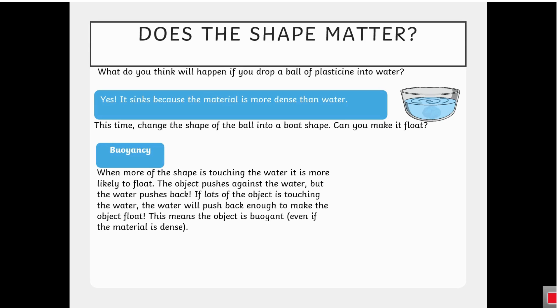Buoyancy. When more of the shape is touching the water, it is more likely to float. The object pushes against the water, but the water pushes back. If lots of the object is touching the water, the water will push back enough to make the object float. This means the object is buoyant, even if the material is dense.